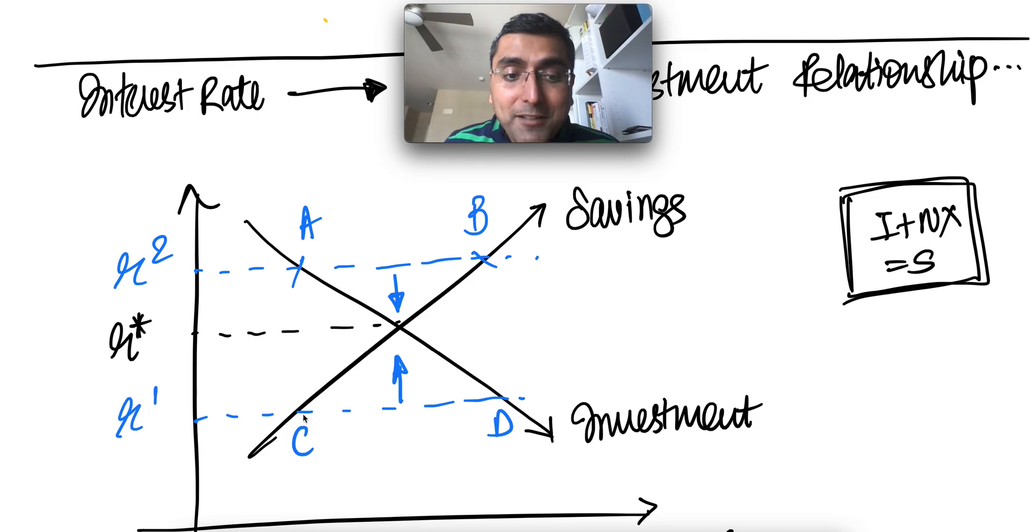The money is not available, meaning whatever is available is going to go at a premium. So interest rate pressures would be going up. So that's how we learn from savings and investment, how it influences the interest rate, the real interest rate.